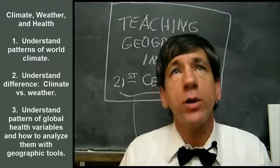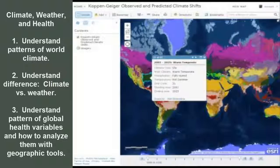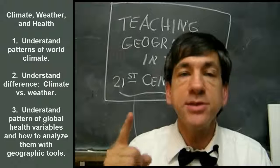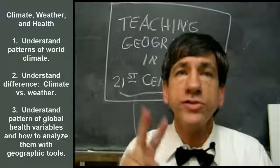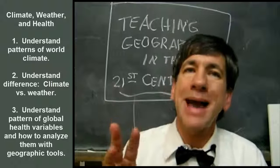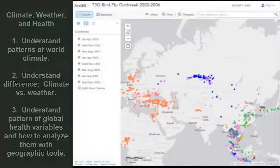First, our module objectives, or our week objectives. We're going to understand patterns of world climate, and the relationship of climate to latitude, altitude, seasons, and oceans. Also, we're going to understand the difference between climate and weather — pretty key that the students understand that. Number three, understand some of the patterns of world and USA health variables, and how to analyze them using geographic tools.